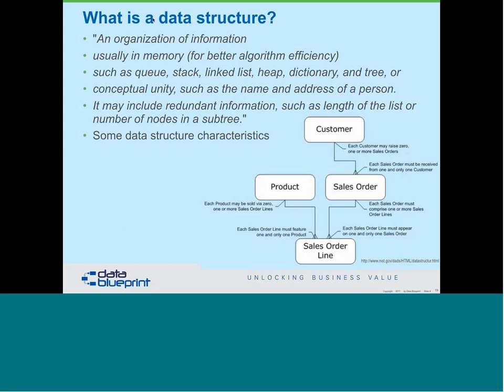There are other characteristics used with data structures, including rules for processing — we call that the grammar of the data structure — and constraints. Brazil at one point made the primary key for voting the parents' names and date of birth, which works perfectly for all of the population except for twins. There was one of each pair of twins that could not vote because of that bad data structure.